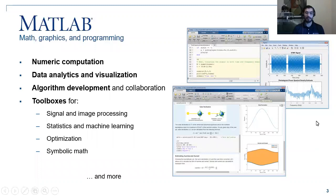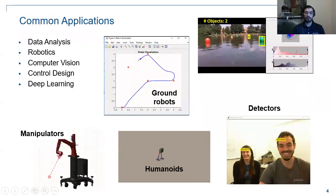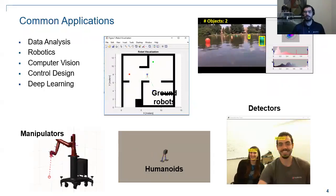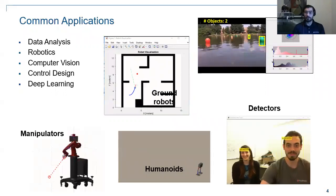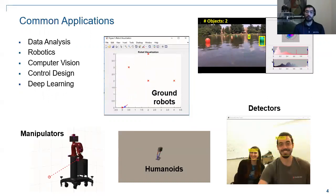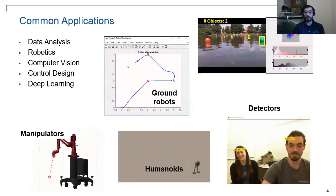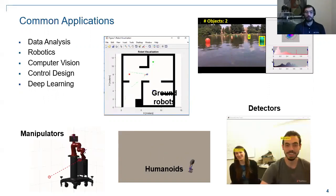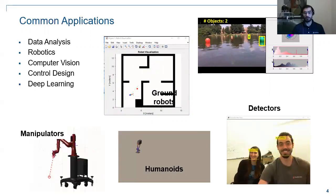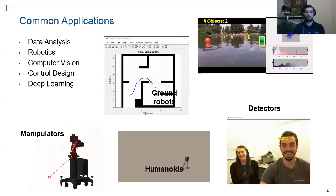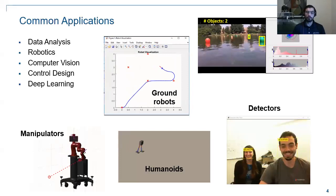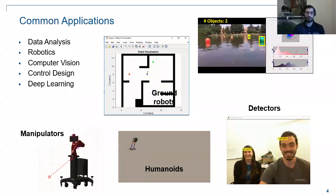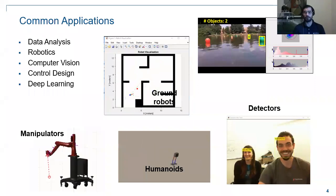All products have a rich amount of features that we've coded, tested, and documented to save engineers and scientists time. Some cool things you can do with MATLAB include data analysis, robotics, computer vision, control design, and deep learning. For example, for object detection you can interactively select a color you're looking for. For ground robots moving around a map, we provide algorithms to create maps, track robot position within those maps, and create trajectories.